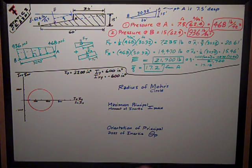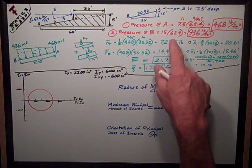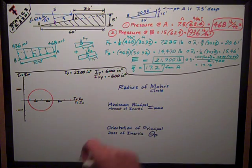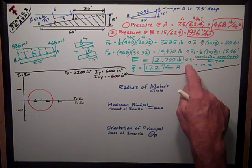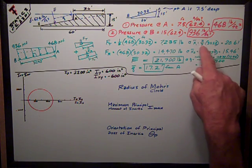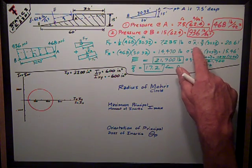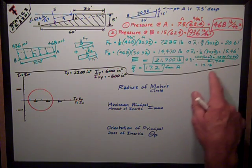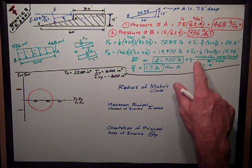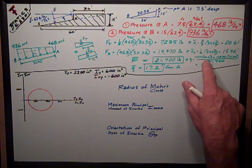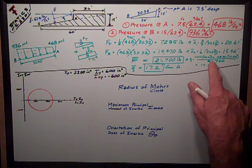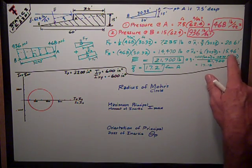To get the total resultant, I just add those two numbers up: 21,700 pounds. To find the x bar distance, I multiply times the force, sum them up: 7,235 times 20.61 plus 14,470 times 15.46.